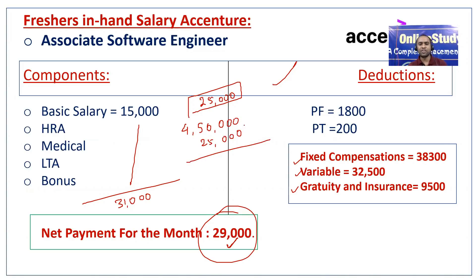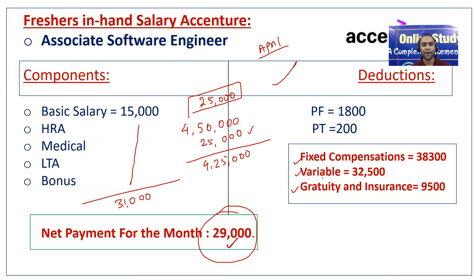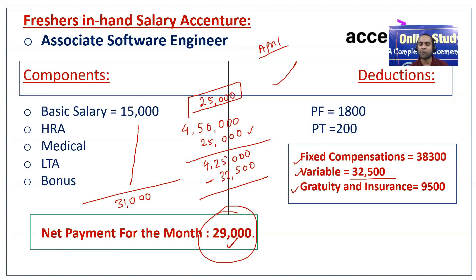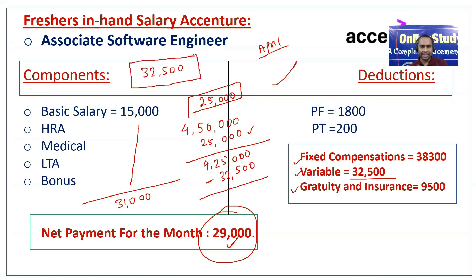Suppose you are joining in April — in that month you will get this 25,000 extra. So basically your recurring package is 4 lakhs 25,000. Now out of that, your variable will be 32,500. What is this variable? It basically depends upon your performance and the company's performance.